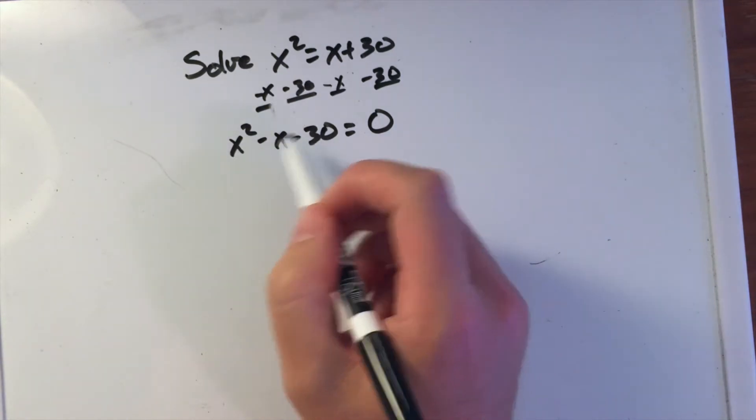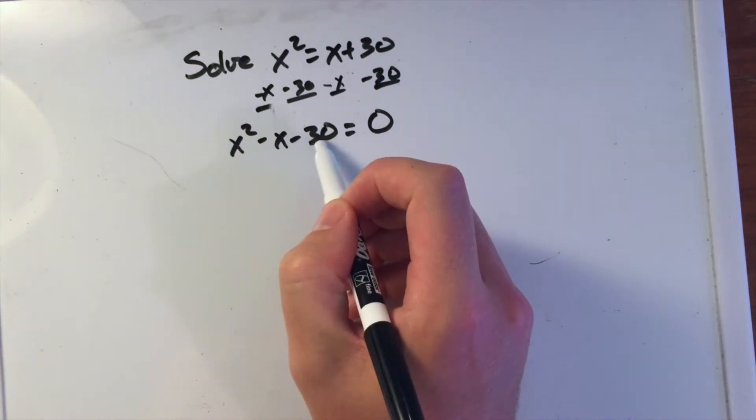We have some coefficients out here: 1, negative 1, and negative 30.